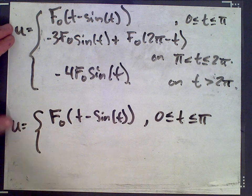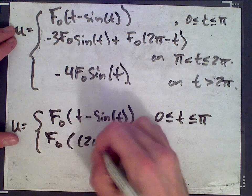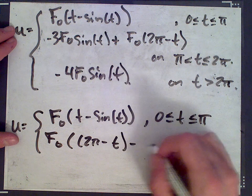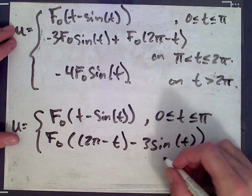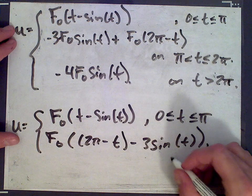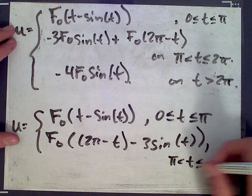We have f0 times 2π minus t, minus 3 sine t, on the interval from π to 2π.